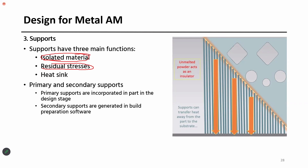Support structures can take away some heat from the melt pool and from the 3D printed parts. They act as a heat sink and can minimize warpage and distortion in 3D printed parts. Primary supports are the ones you actually include in your CAD model when you are designing the part — you need this kind of support structure for overhangs, so you design it in the CAD model itself.